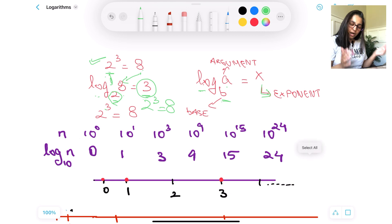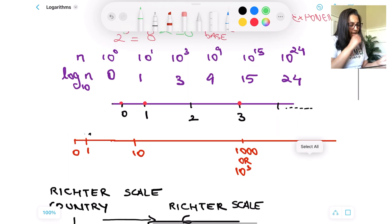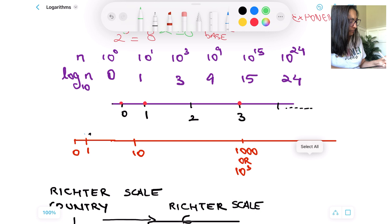Talking about applications, let's say there's a number n and this is its variation: 10^0, which technically is going to be 1, and 10^1, 10^3, and so on and so forth till 10^24.